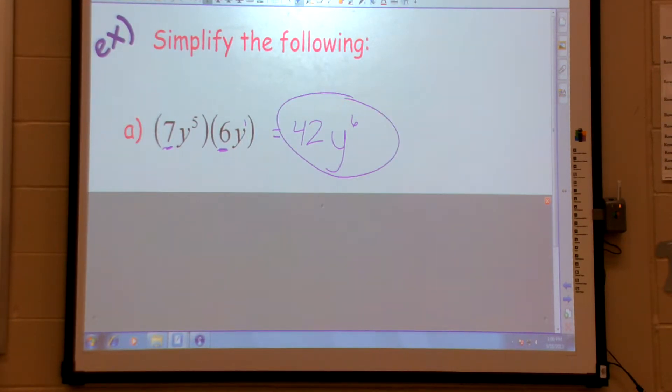So multiply coefficients. That says 7 times 6, I go ahead and do that. But don't ever multiply bases. You add the powers.